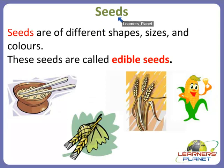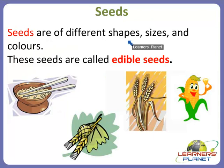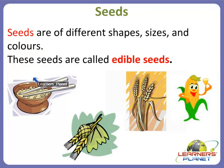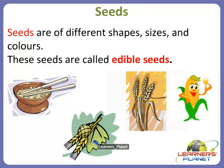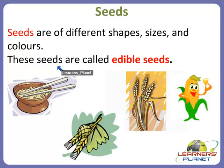Now we will study about seeds. Seeds are of different shapes, sizes and colors. We eat some seeds such as rice, wheat, oat, barley, corn and groundnut. These seeds are called edible seeds.